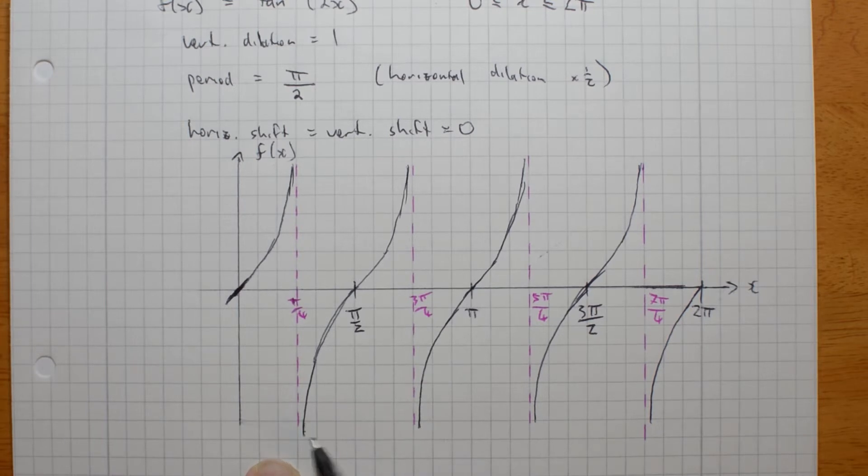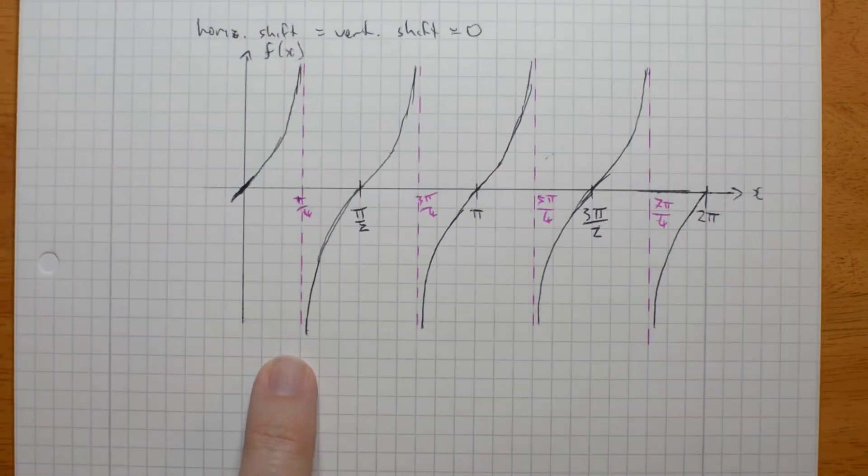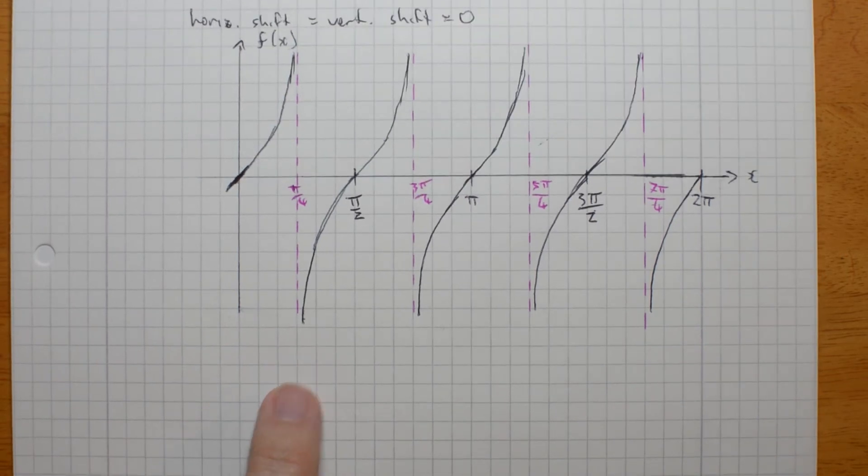Have you thought at all yet about how we're going to describe where these asymptotes go? Well, they're at all the odd multiples of pi on 4. This would be 2 pi on 4. That's an intercept. So the intercepts are at the even multiples of pi on 4. In fact, they're at every multiple of pi on 2. And the asymptotes are at the odd multiples of pi on 4. We can actually write that if we think carefully.